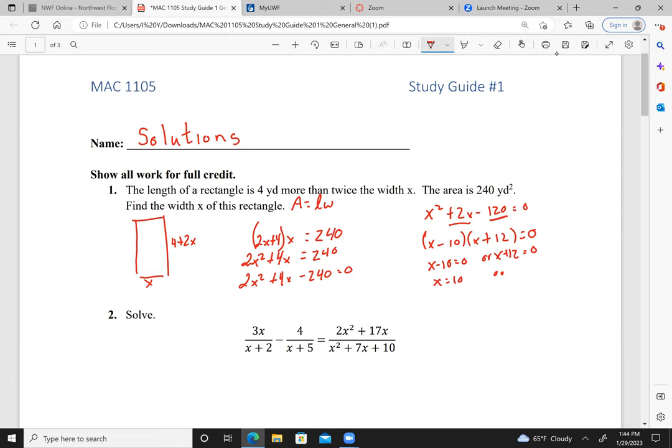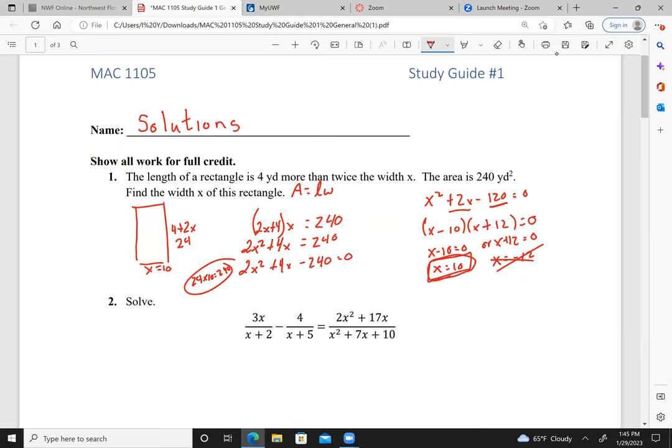Or x equals negative 12. Well, that is not possible. So x equals 10. So if x equals 10, 4 plus 2x would be 24. 24 times 10 equals 240. So this is our answer. Okay, move to the next one.